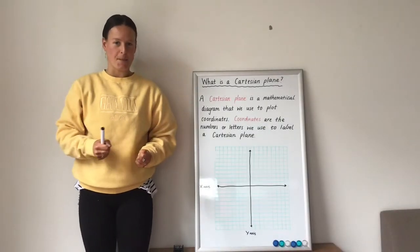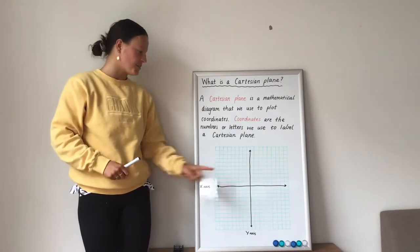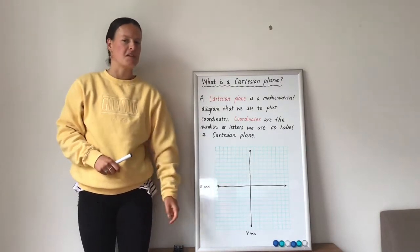So I've drawn up my Cartesian plane on my grid paper, but there are a few more things that I need to do. I can't just leave it looking like a big plus sign.